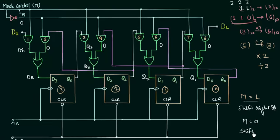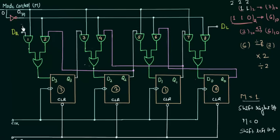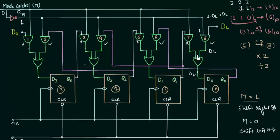When M equals 0 we have the shift left operation. With M equals 0, M complement becomes 1, so AND gates 2, 4, 6, and 8 are operational while AND gates 1, 3, 5, and 7 are disabled. DL is connected to AND gate 8 and the output is DL, so the serial shift left input DL is stored in flip-flop number 0.